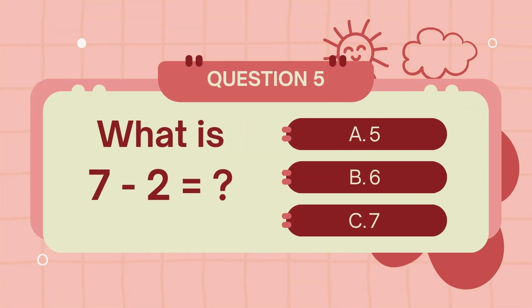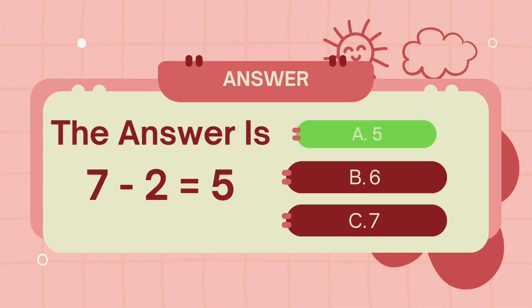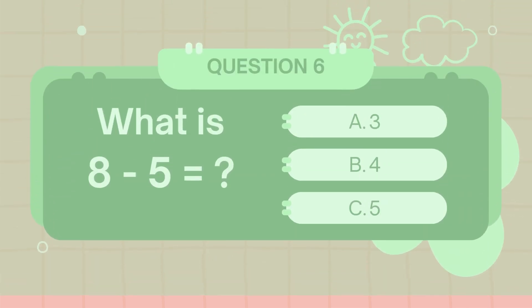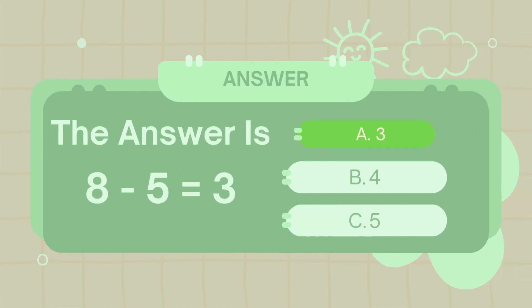What is 7 minus 2? The answer is 5. What is 8 minus 5? The answer is 3.